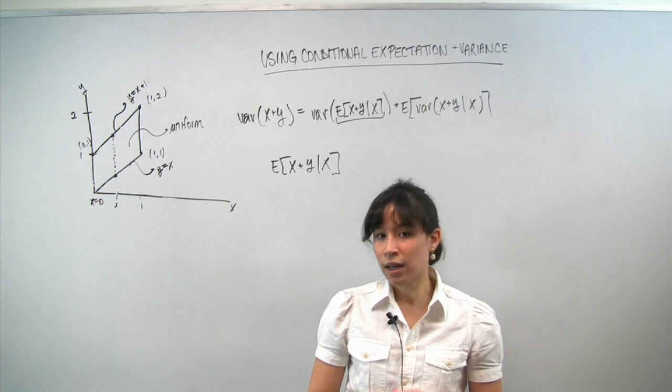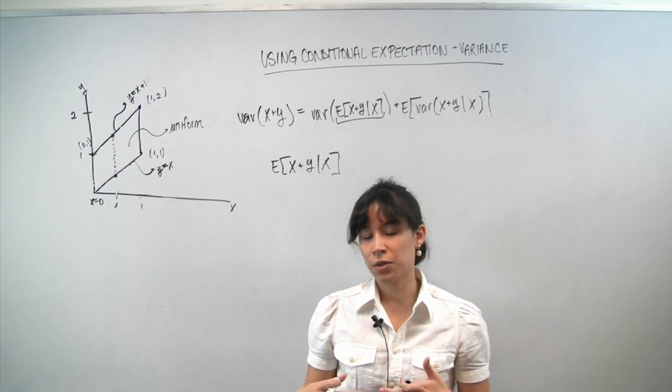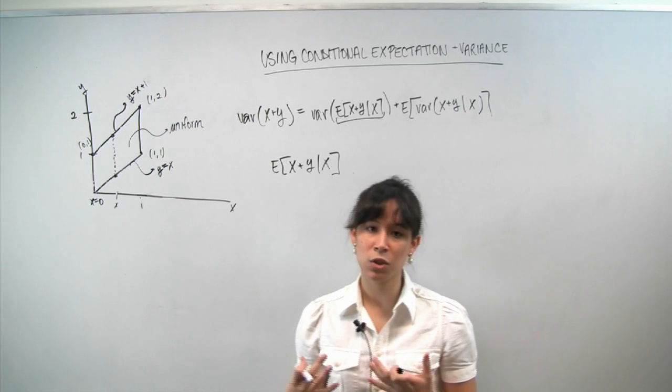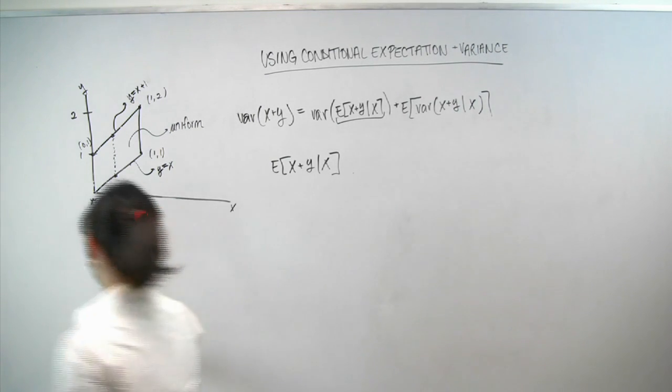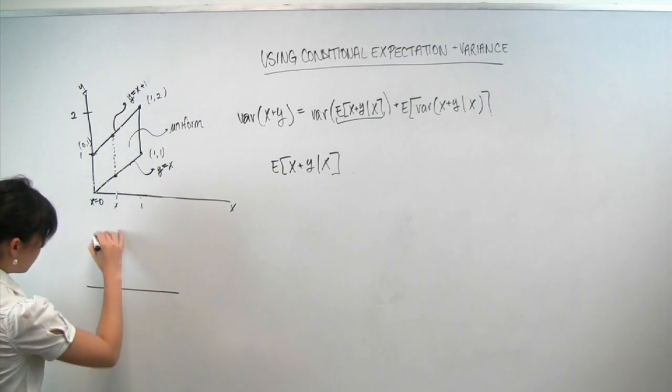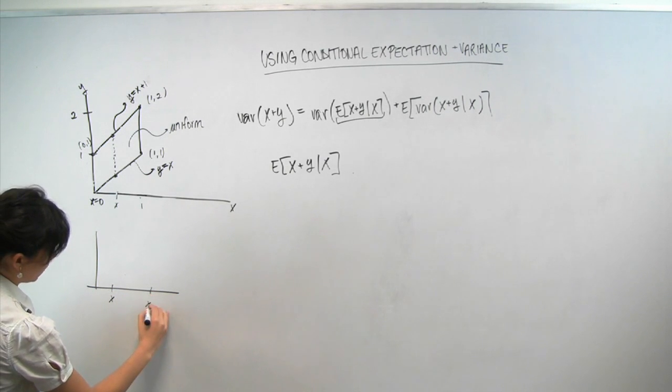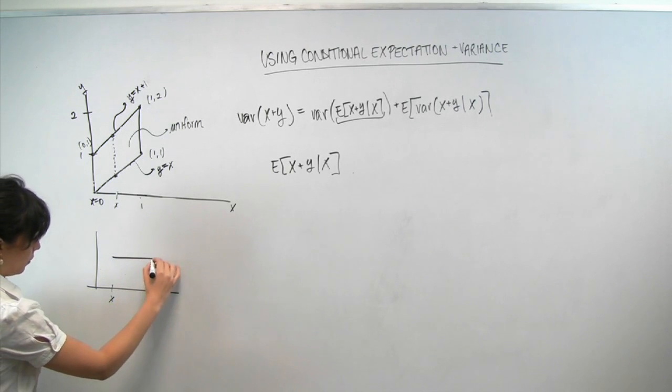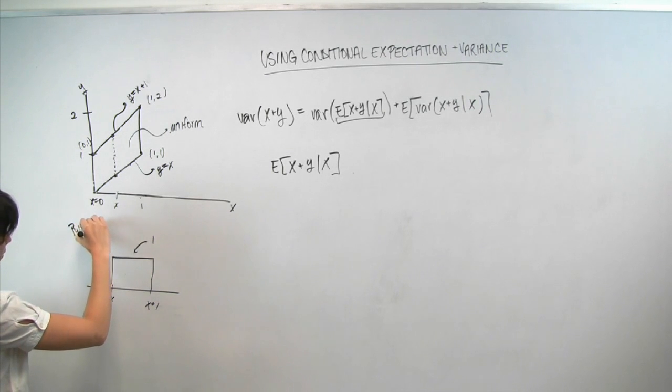We know that in the unconditional universe, x and y were uniformly distributed. So it follows that in the conditional universe, y should also be uniformly distributed because conditioning doesn't change the relative frequency of outcomes. So that reasoning means that we can draw the conditional PDF of y, conditioned on x, as this. We said it varies between x and x plus 1, and we also said that it's uniform, which means that it must have a height of 1. So this is p y given x, y given x.